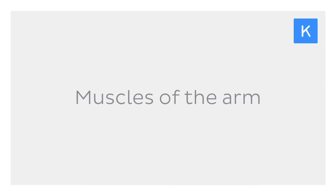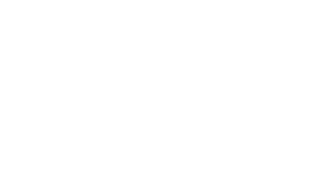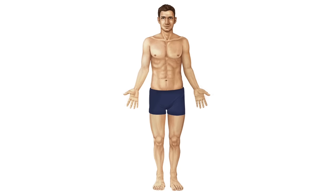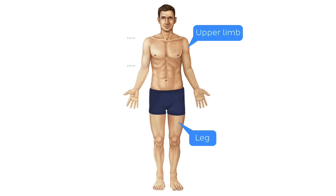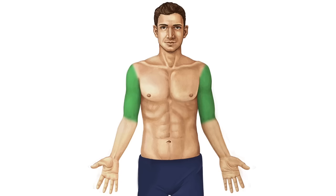Before we begin, I want to clear up an issue that often arises when transitioning from everyday terms to anatomical terms. As a kid, your arm is your arm and your leg is your leg, but in anatomy, your arm or upper limb is divided into the arm and forearm, and your leg or lower limb is divided into the thigh and leg. So when I say we're going to talk about the muscles of the arm, I mean this region here, between the shoulder and the elbow joints.